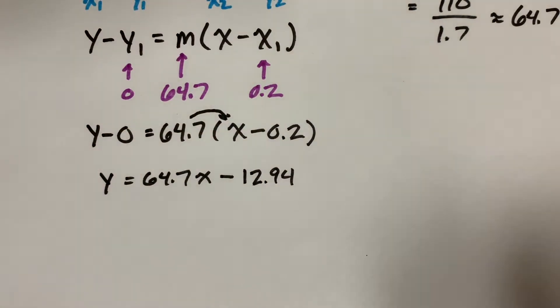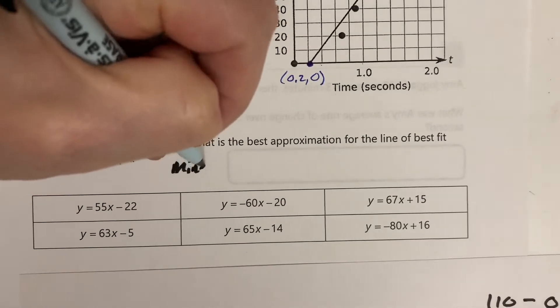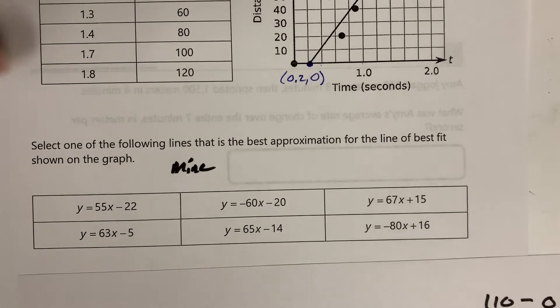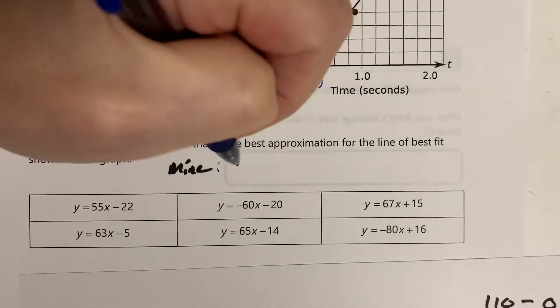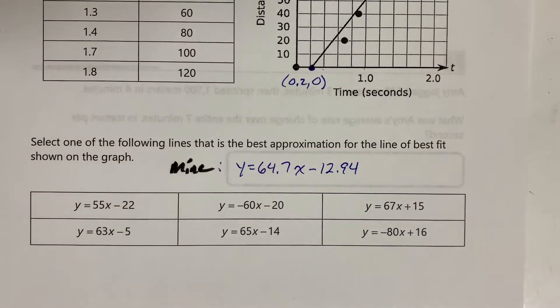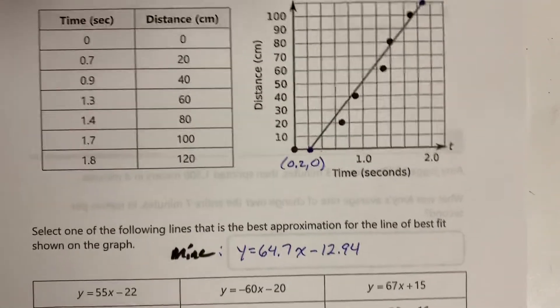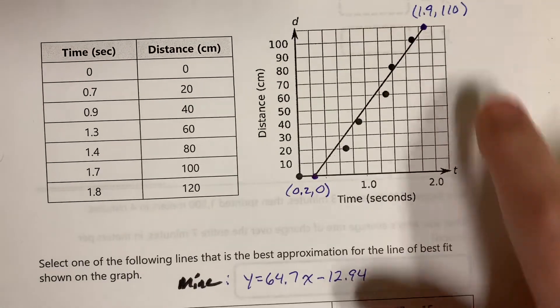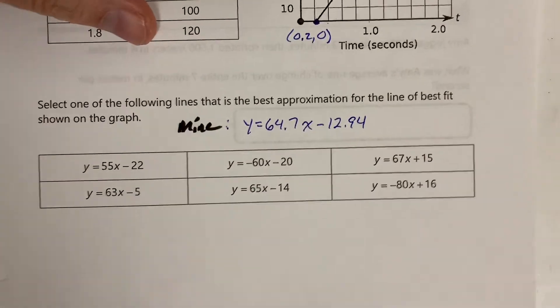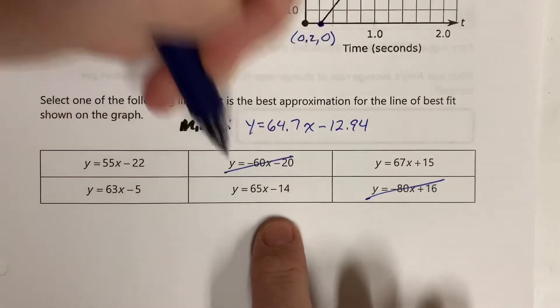So I'm looking at 64.7x minus 12.94. I want to see which of these equations down here is closest to this one. Mine is going to be y equals 64.7x minus 12.94. Now let's take a look and see which of these answers make sense. First of all, the slope of this regression line is positive, so any line down here that has a negative slope is obviously going to be wrong. There's no way you should have picked this one with negative 80 or this one with negative 60.